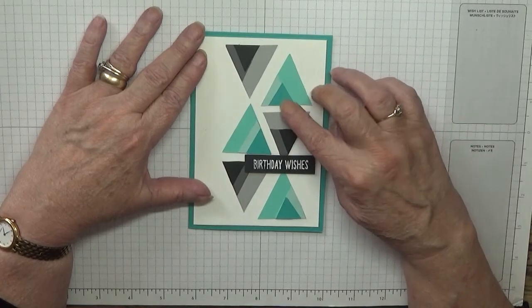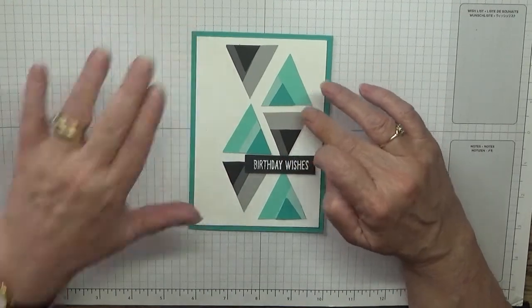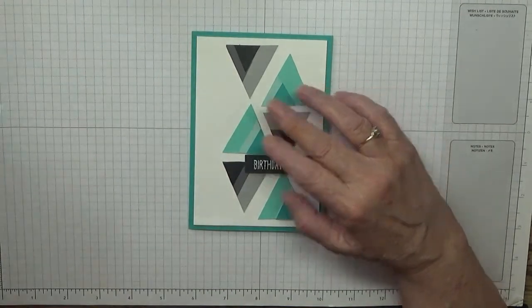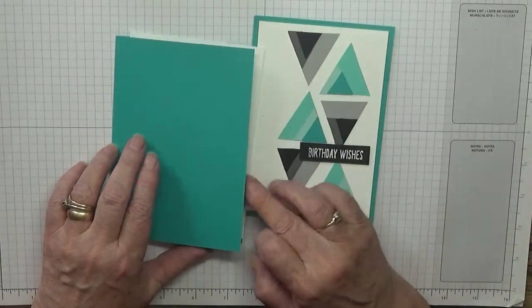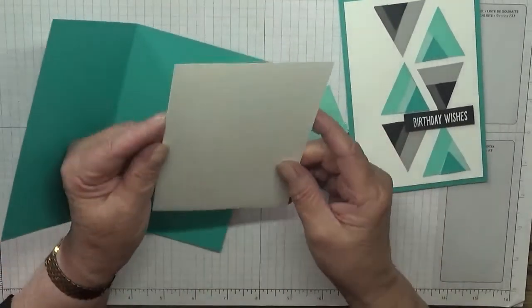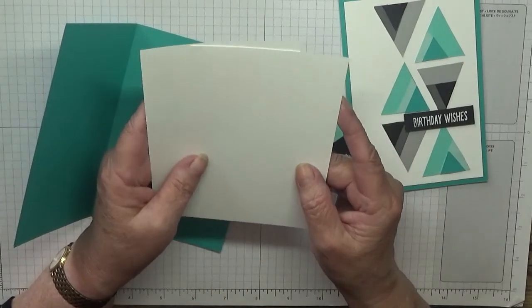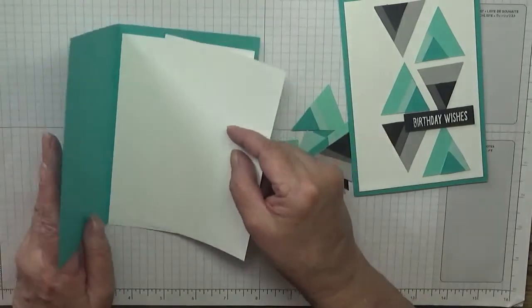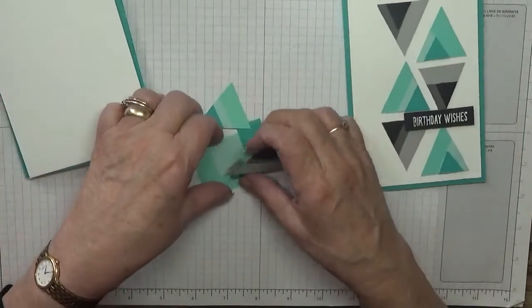This is made by the triangle dies that Stampin' Up sells. I haven't got them but I made my own triangles. For this I've got a Bermuda Bay card base of eight and a quarter by five and seven-eighths, two basic whites at five and five-eighths by three and seven-eighths, one for the inside and one for the outside.